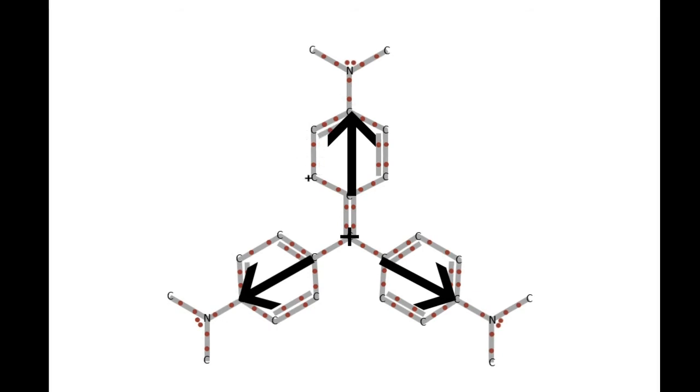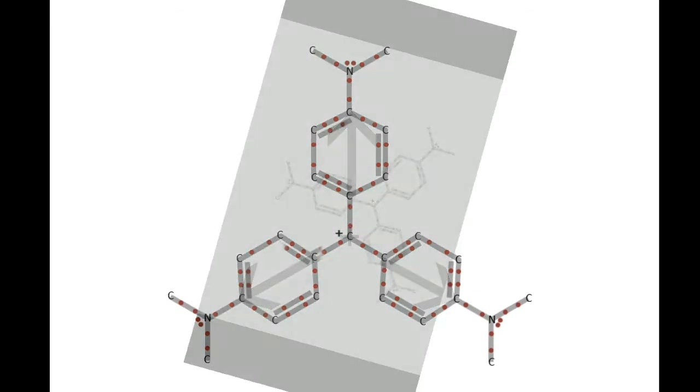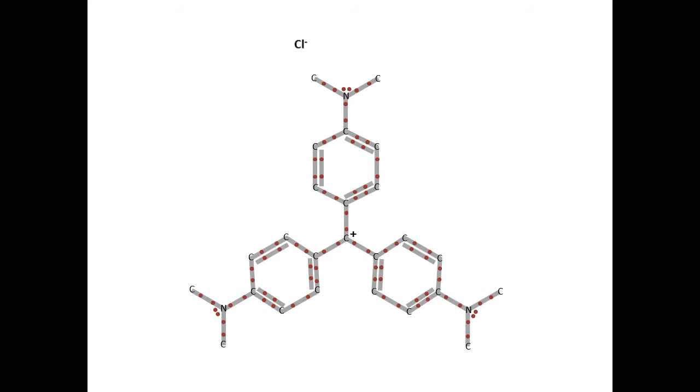The positive charge of the central carbon can now attract a chemical species that has a negative charge. Of course, the crystal violet molecule won't react with just any species. It has to be a reactive species. A chemical species like hydroxide reacts beautifully. When the hydroxide ion comes close to the central carbon atom, they react to form a covalent bond.